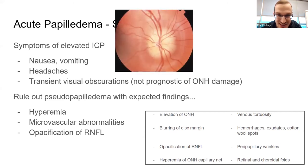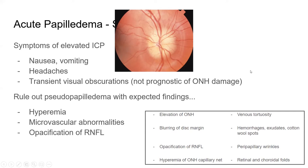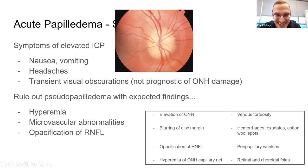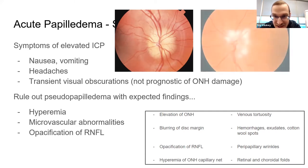Looking at another photo: there's swelling of the nerve, paton lines circumferentially, minimal vessel obscuration, and some pallor — no drusen appreciated. Without vessel obscuration, there's concern for pseudopapilledema. This is actually an example of pseudopapilledema, likely from drusen. If you were seeing true edema, you'd expect more vessel obscuration with that degree of apparent swelling at the disc margin.